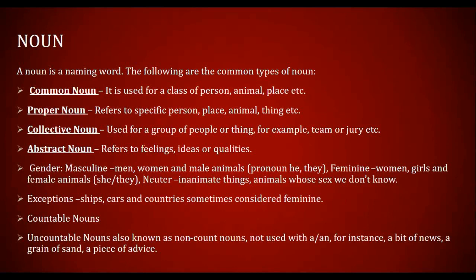Abstract nouns refer to qualities like honor and kindness. It's important to differentiate between adjective and noun. If you say 'she's kind,' 'kind' is an adjective — you're describing her attribute. But if you say 'her kindness won the hearts of millions,' 'kindness' is an abstract noun. You must have clarity to differentiate between different word classes, especially noun and adjective, as many people confuse the two.